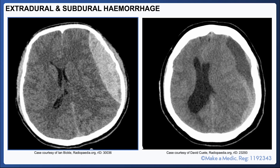Intracranial bleeds are a very common acute indication for a CT head scan. Extradural hemorrhages are encased between the dura and the inner surface of the bones of the skull, giving a convex appearance. Furthermore, as they are usually quite acute, the blood will appear hyperdense.